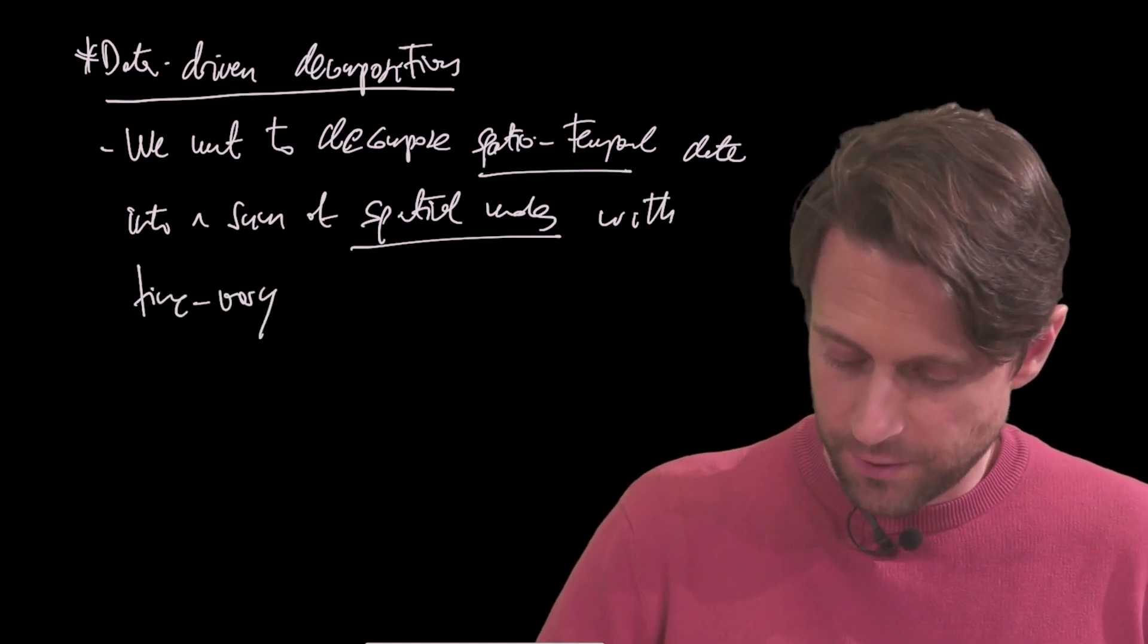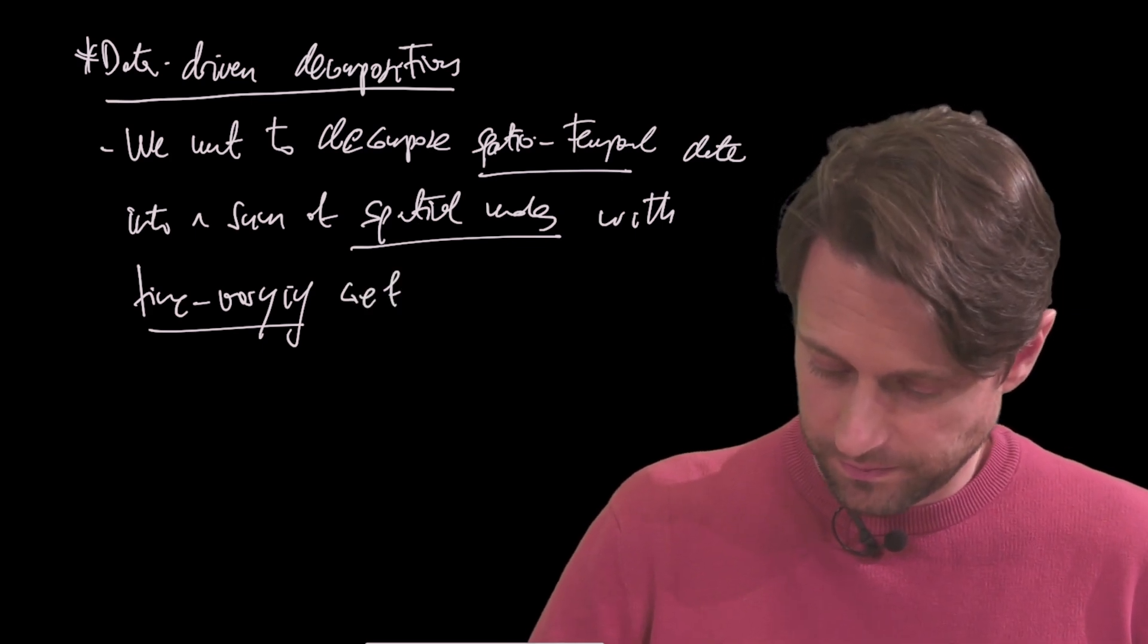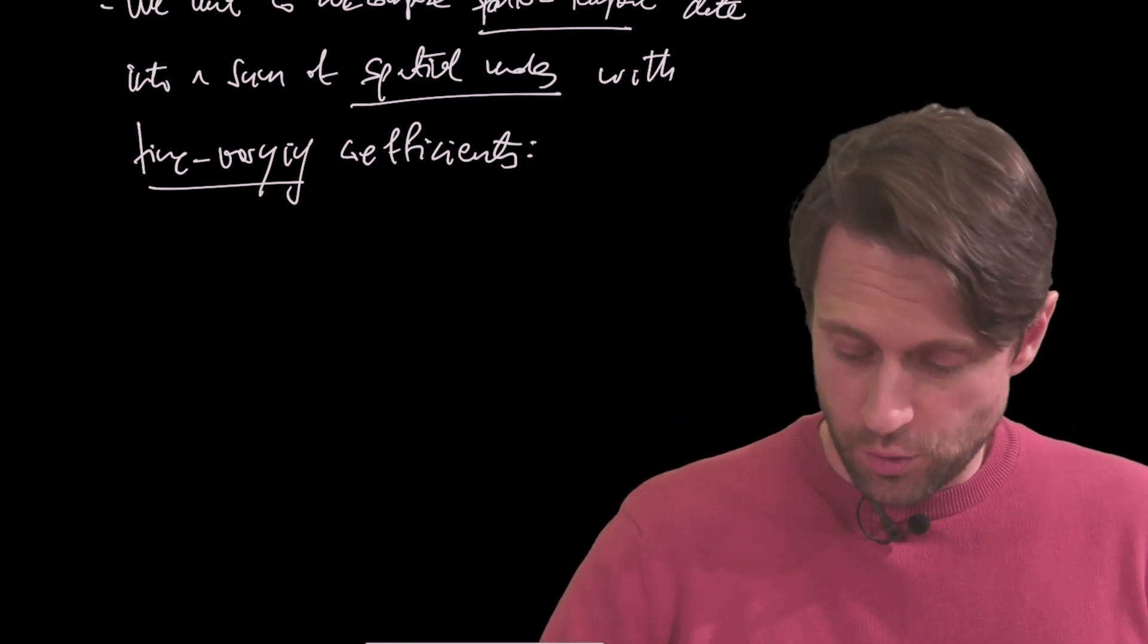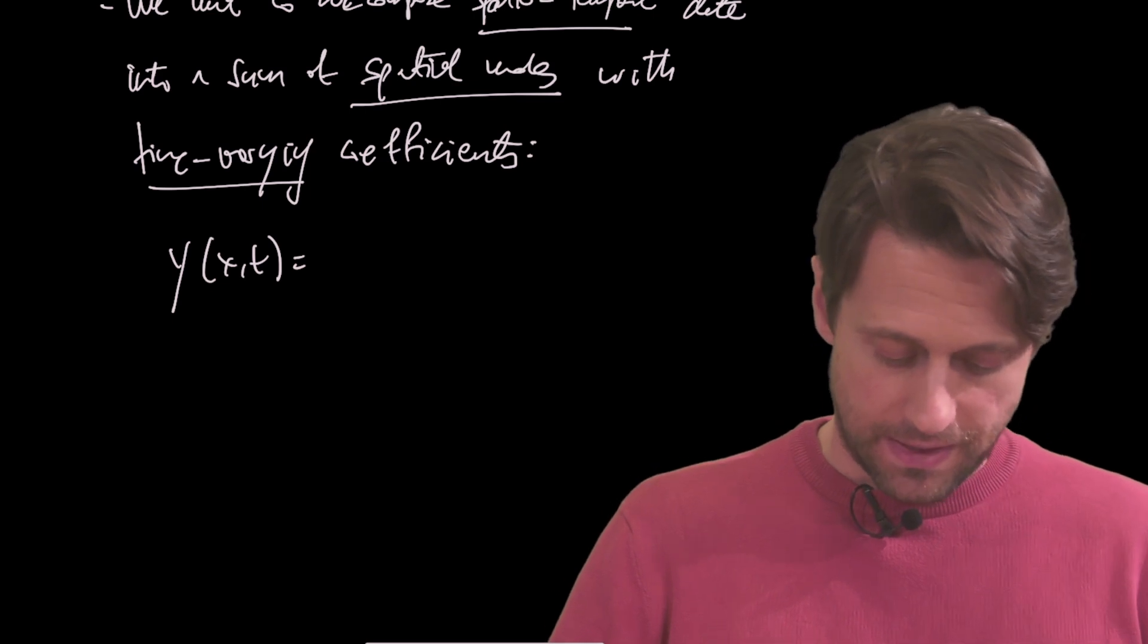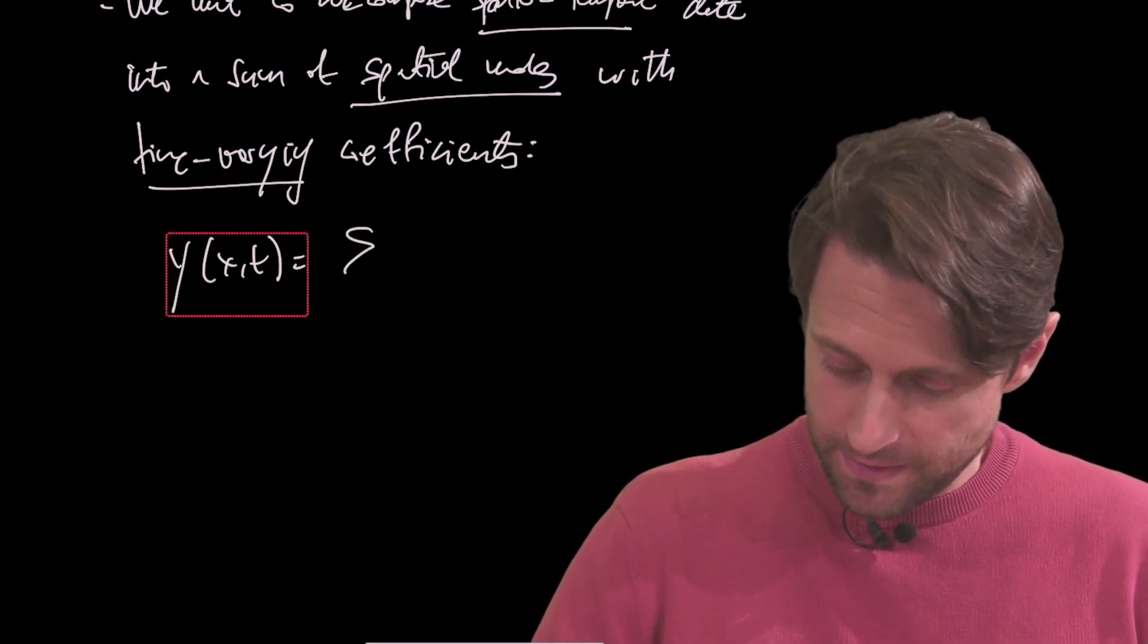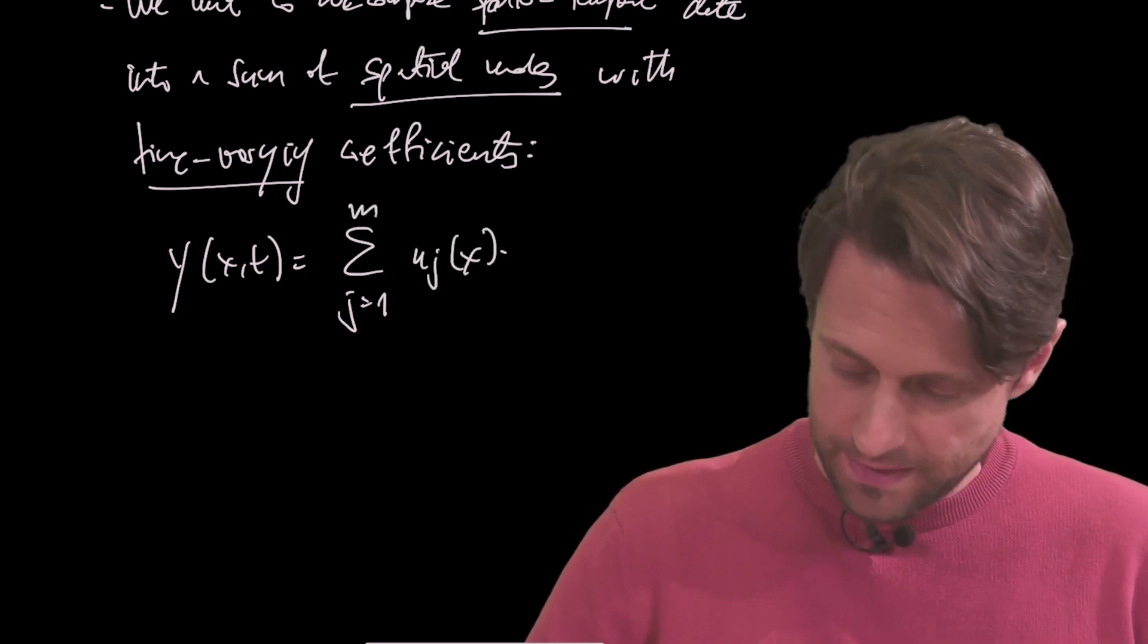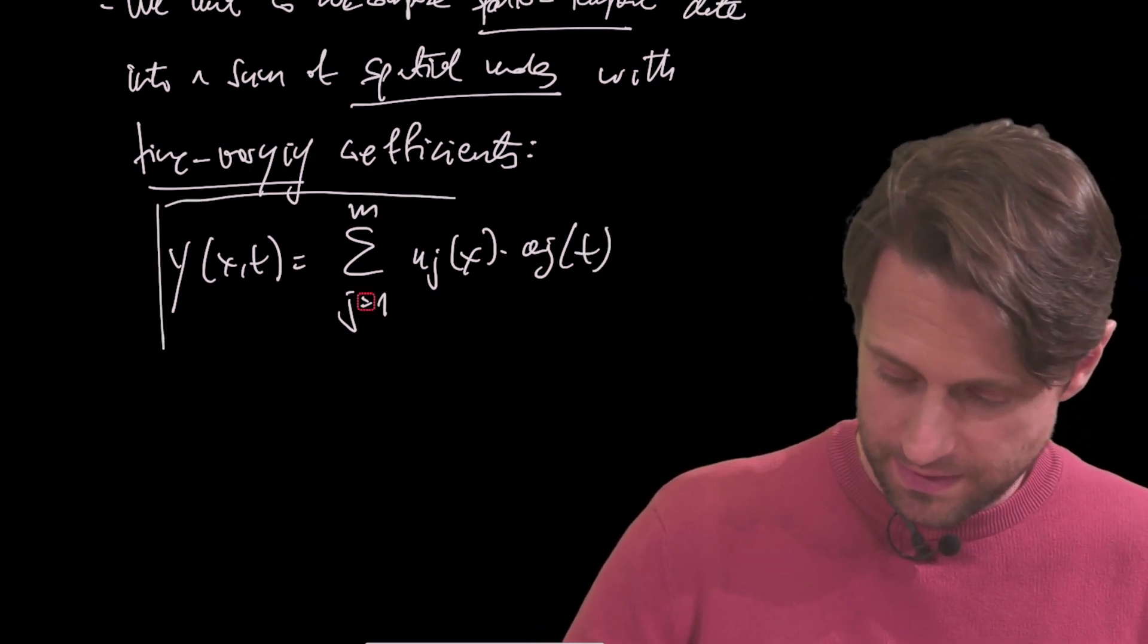So let's assume that function y depends on space and time, and we can express this function as the sum from j equals 1 to m of u_j(x) multiplied by a_j(t). So that's basically what we want to do.